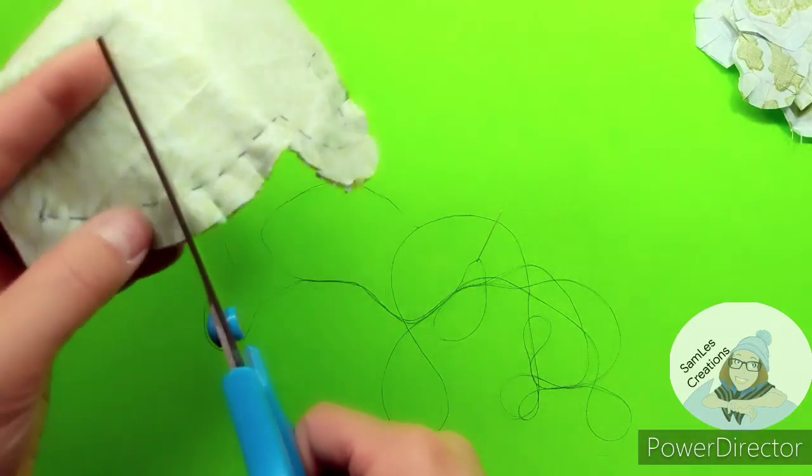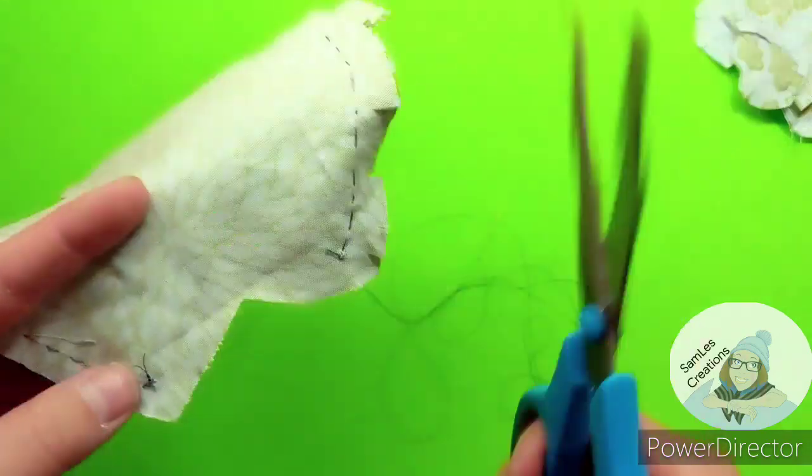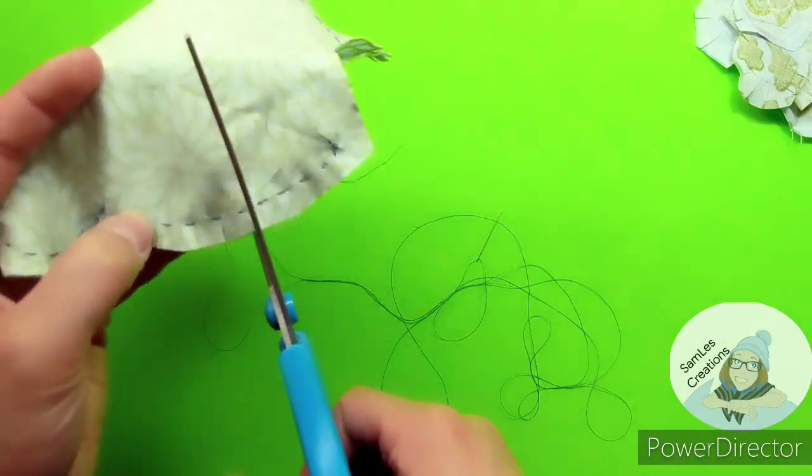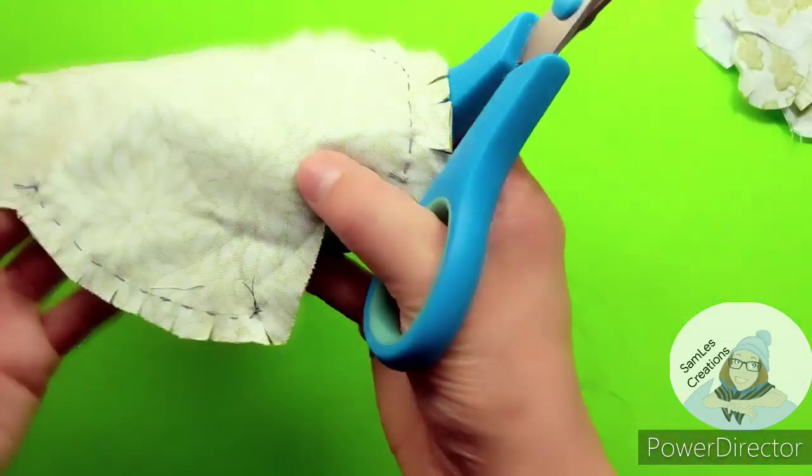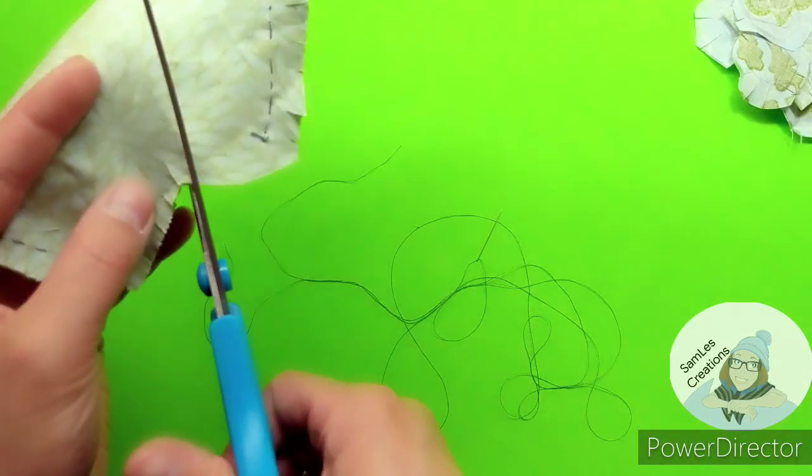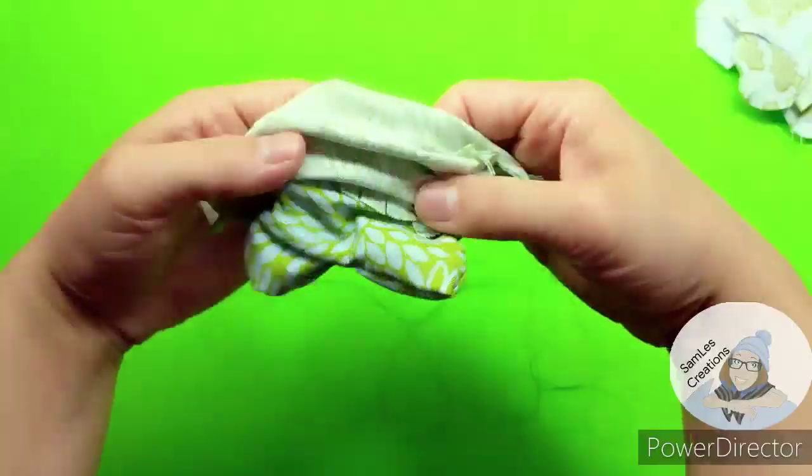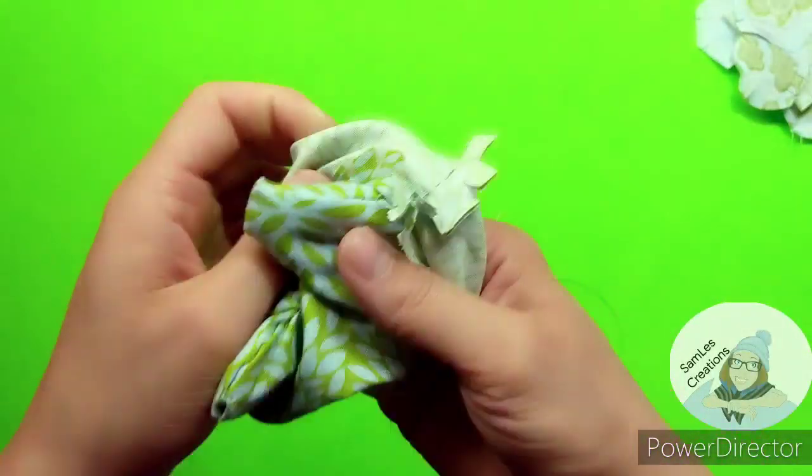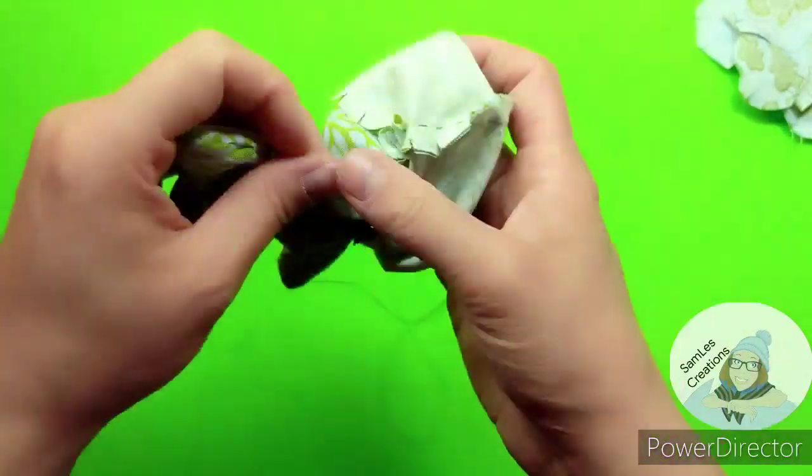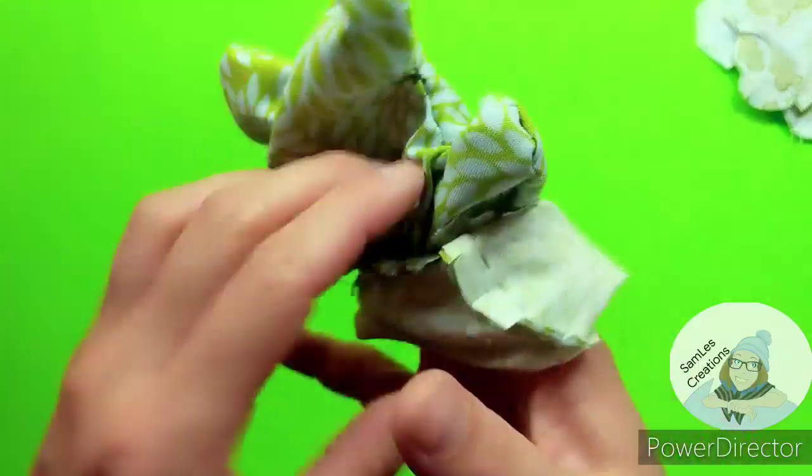You probably don't need nearly this many, probably every inch or two would be fine. I just used a running stitch on the outside, so I'm being very careful while flipping it inside out so that I don't break any of the thread.